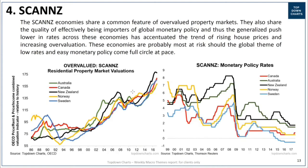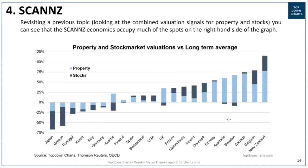Is it possible that the SCANS economies see a correction in these property markets that turns into a domestically systemic issue, raises questions across these economies, and creates some global ripple effect? Absolutely. If we saw a rapid increase in interest rates and bond yields — a more rapid turnaround in global monetary policy settings than expected — this would probably be just one of a number of areas that would come under pressure. Even setting aside the global impact, from a domestic standpoint, New Zealand would certainly be a concern for investors in New Zealand assets, and the same could be said of Australia, Canada, and the others.